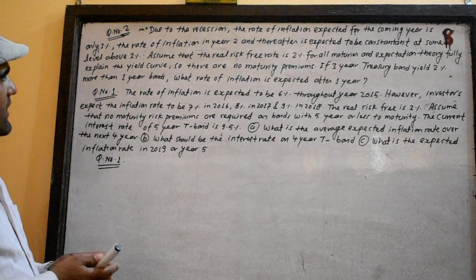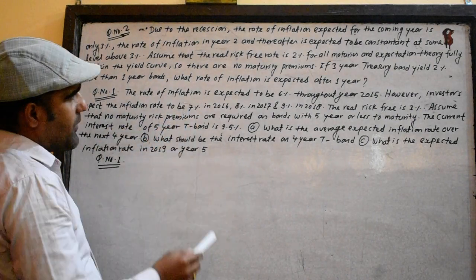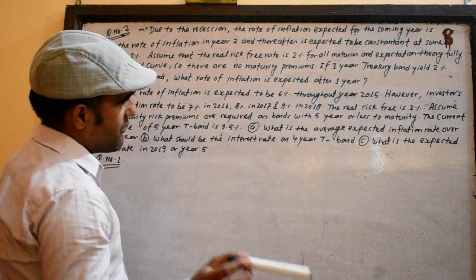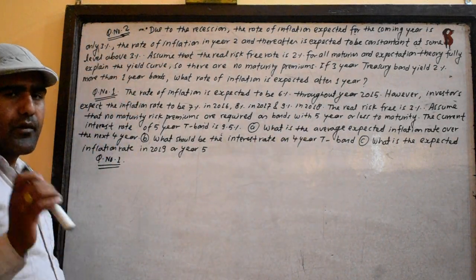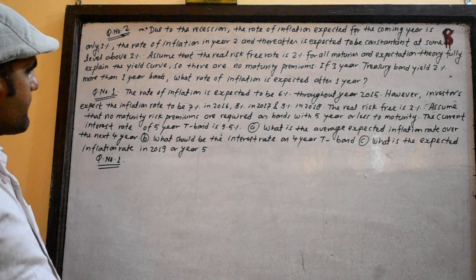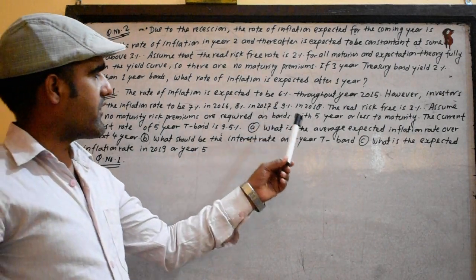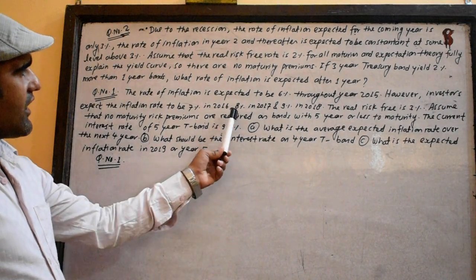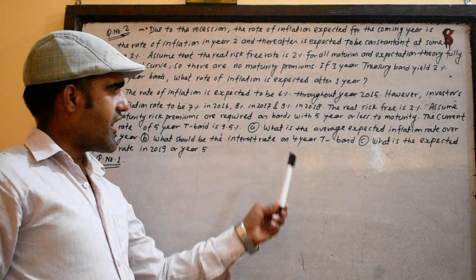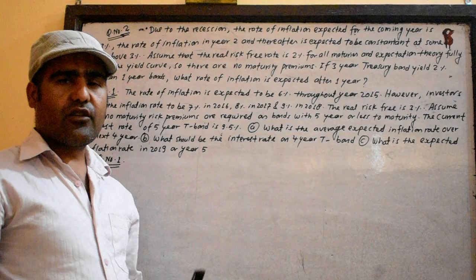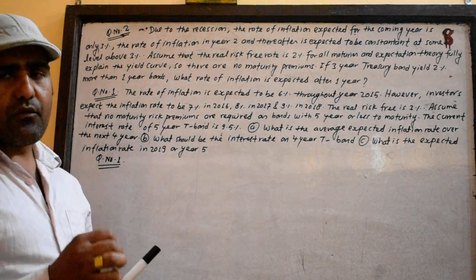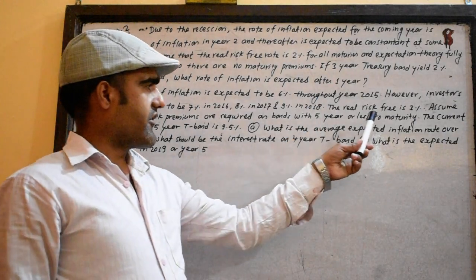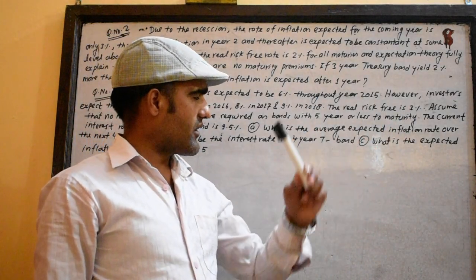The rate of inflation is expected to be 6% throughout 2015. In 2015, the inflation rate is 6%, 7% is 16%, 8% is 17%, 9% is 18%. We label these I1, I2, I3, I4. The real risk-free rate is 3%.